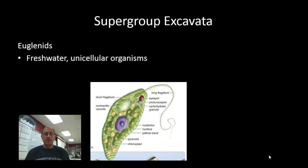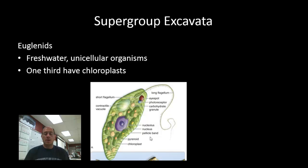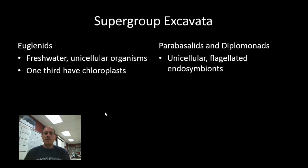The supergroup Excavata includes the organisms called euglena. Euglena are a group of freshwater unicellular organisms — about a third of them have chloroplasts and are autotrophic, while the others are heterotrophic. Some organisms are actually mixotrophic, meaning they derive energy from both photosynthesis and from consuming other organisms like an animal would.